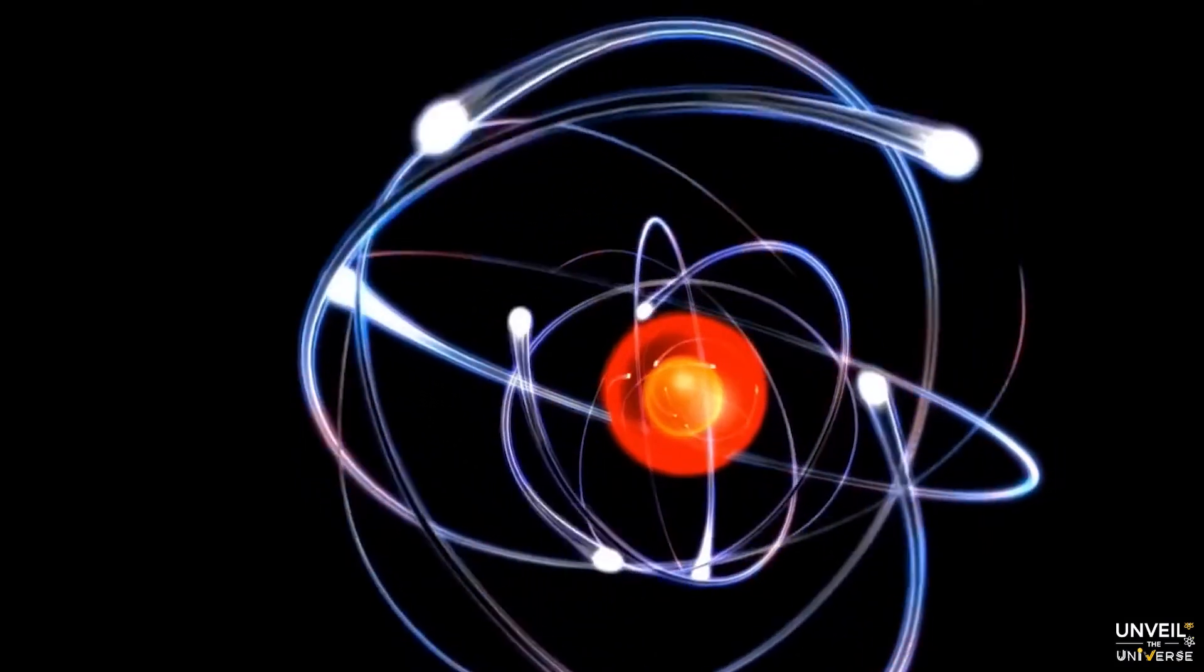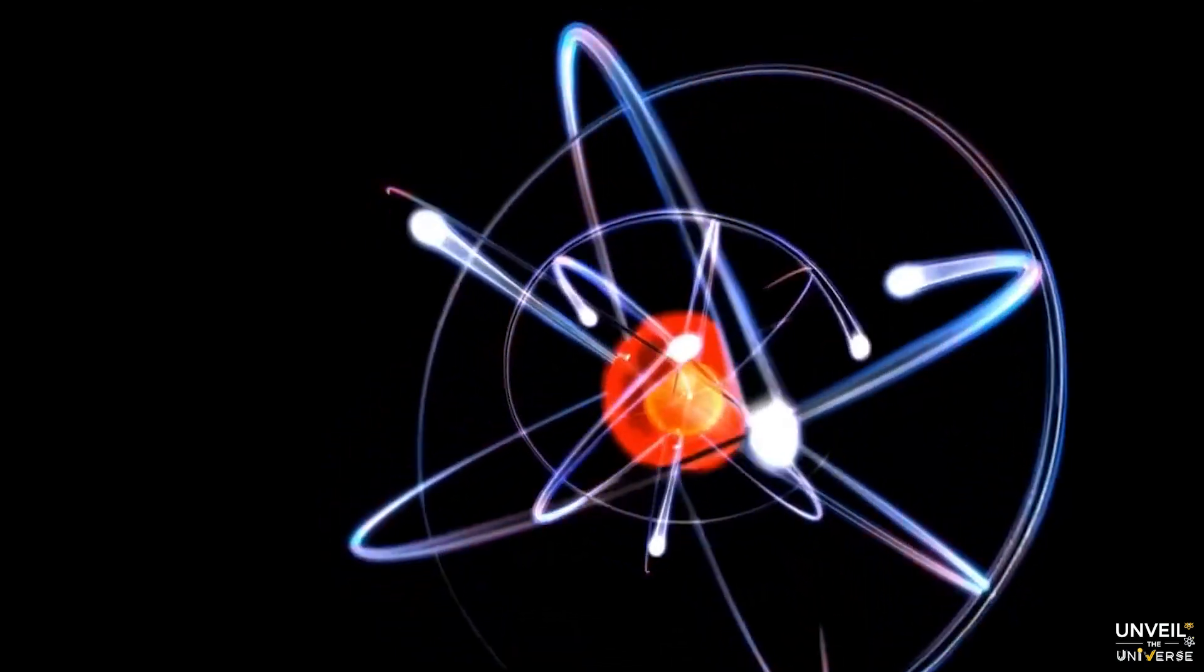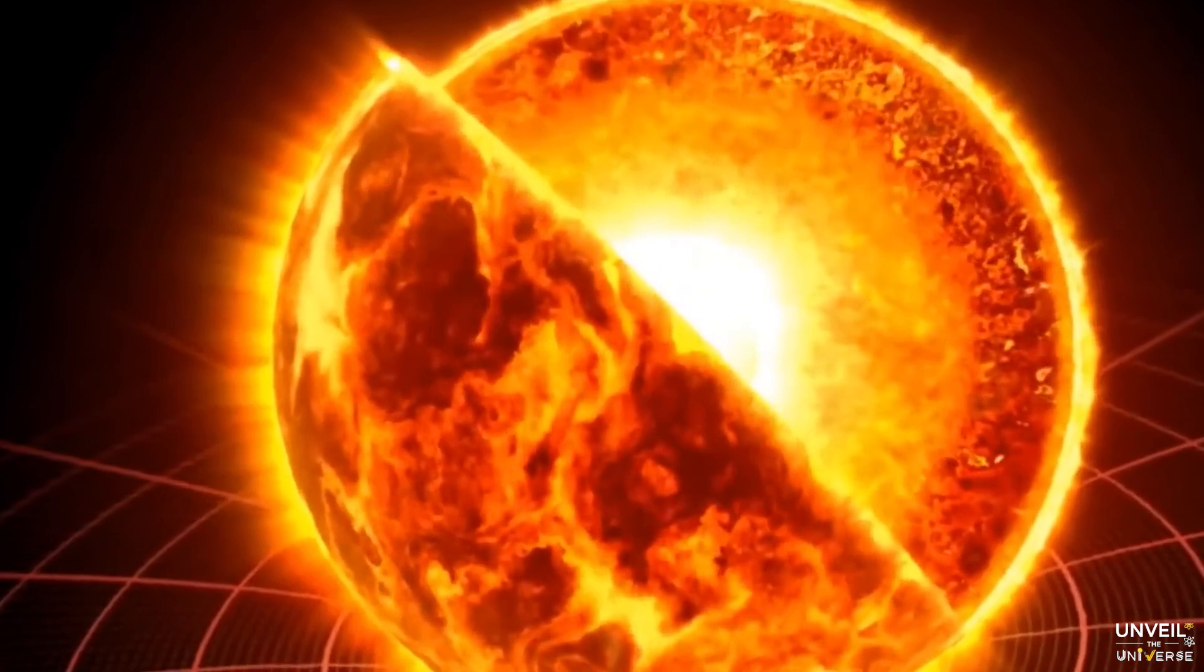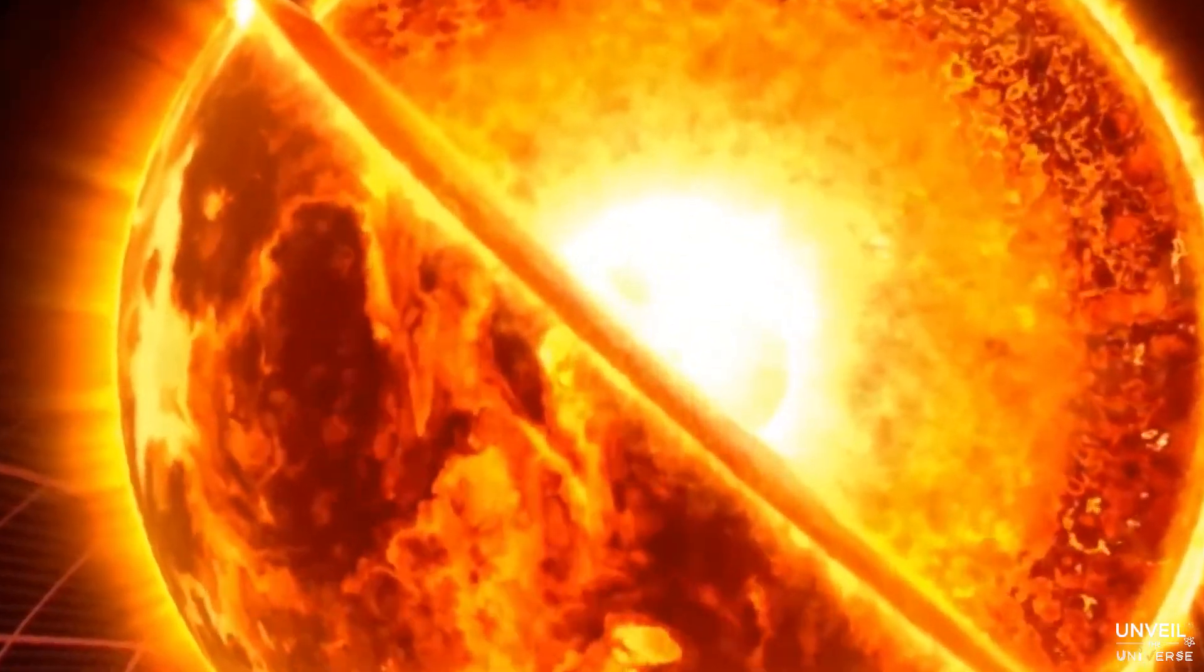Electrons, as you know, orbit the nucleus of an atom, while neutrinos and muons are produced during processes such as nuclear fusion in the cores of stars, like our sun, or when cosmic rays collide with atmospheric atoms on Earth.